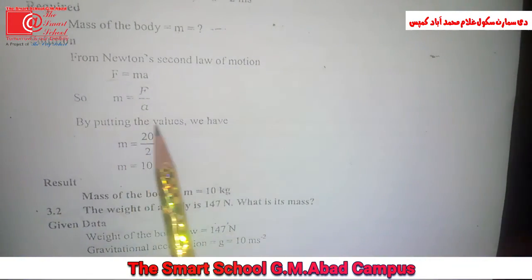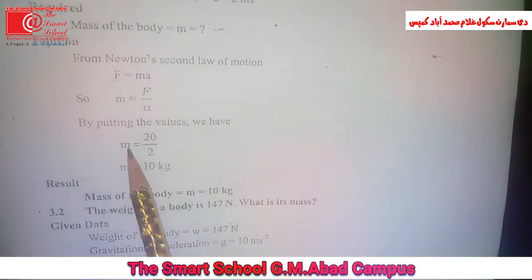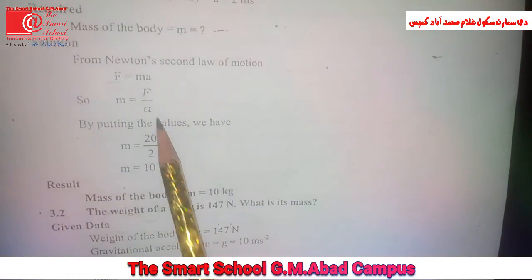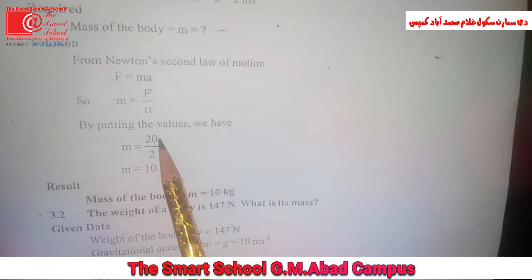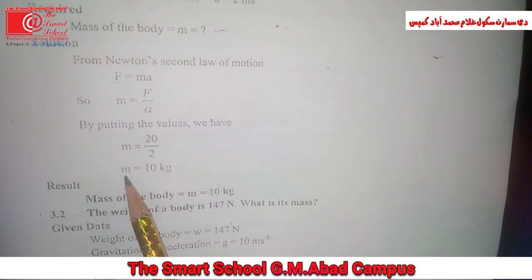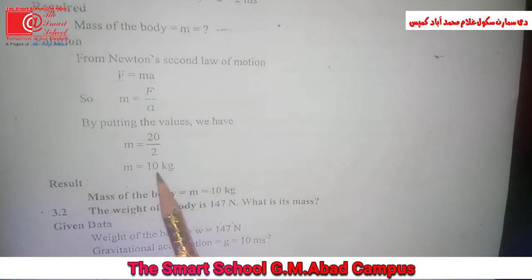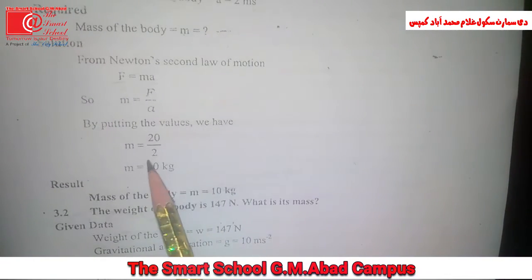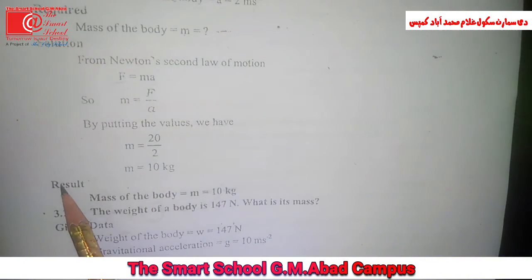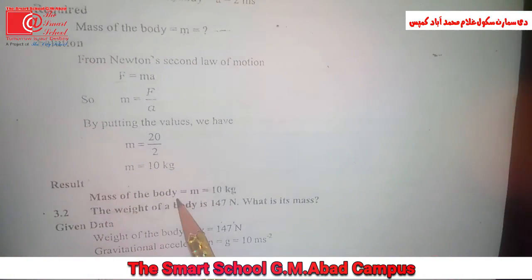By putting the values, we have m is equal to 20 over 2. So, m is equal to 10 kg, which is mass of the body.